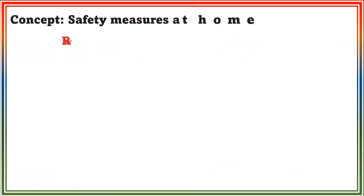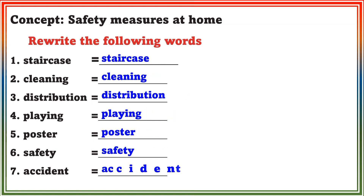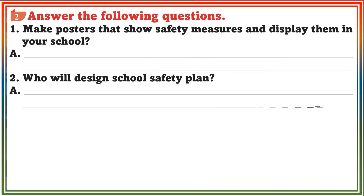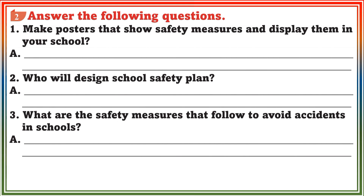Worksheet 4. Concept: Safety Measures at Home. Section 1: Rewrite the following words — Staircase, Cleaning, Distribution, Plane, Poster, Safety, Accident.